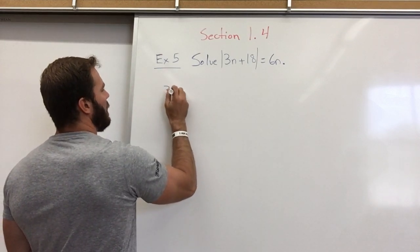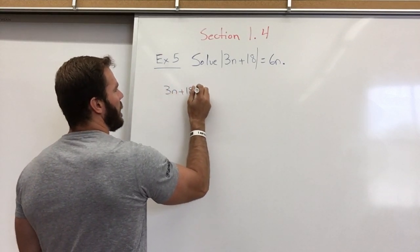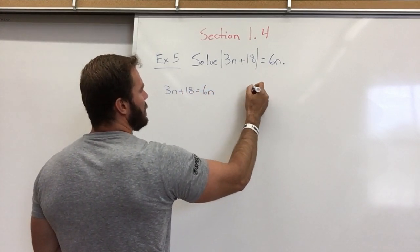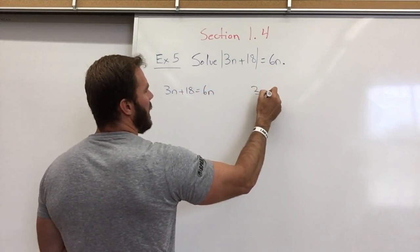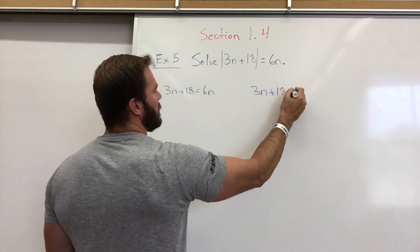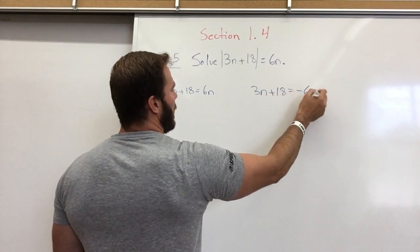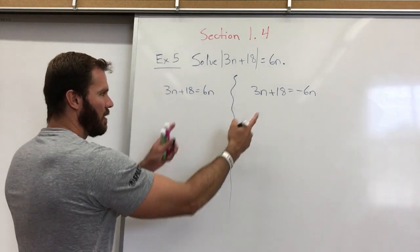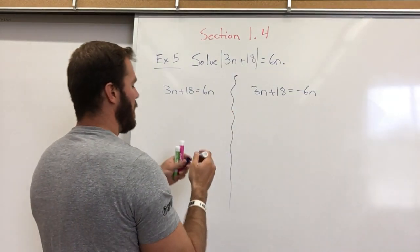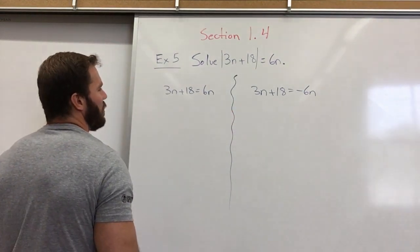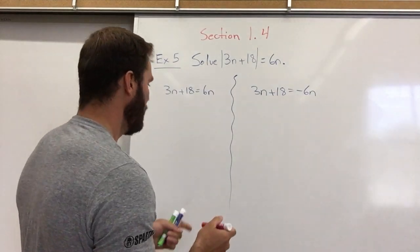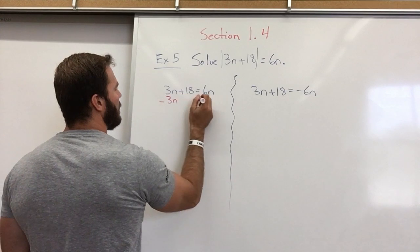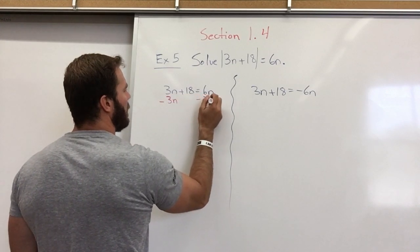This can be 3n plus 18 equals 6n, or it also is 3n plus 18 equals negative 6n. With absolute values, you break them into two equations. So let's get n by using the subtraction property of equality — we're subtracting 3n on both sides.